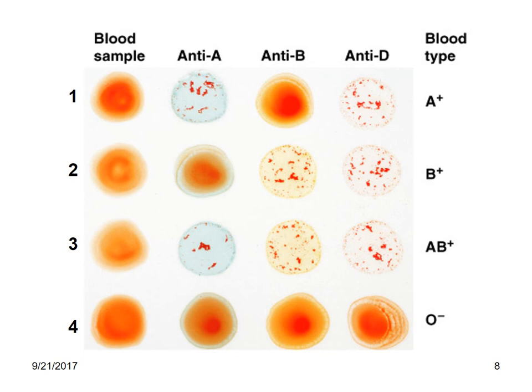Sample number two shows agglutination with anti-A, anti-B, and anti-D, and this person belongs to the B positive group. In the third sample, there is reaction with anti-A, anti-B, and anti-D, and therefore this person belongs to the AB positive type. In the fourth sample, there is no reaction at all in any of them, and this person belongs to the O negative type of blood group.